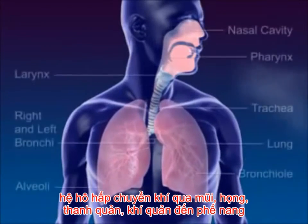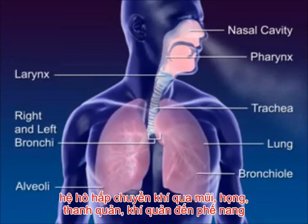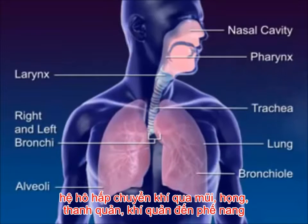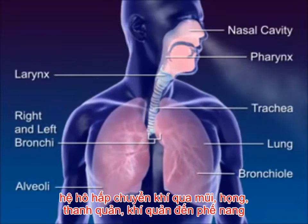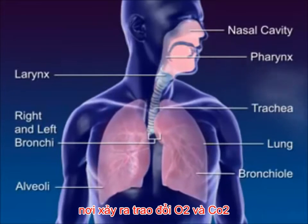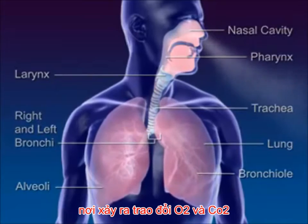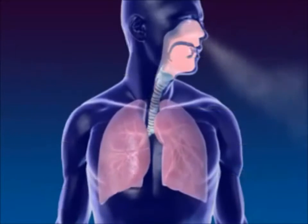The respiratory system moves air through the nose, pharynx, larynx, trachea, and bronchus to the alveoli, where the gas exchange between oxygen and carbon dioxide occurs.